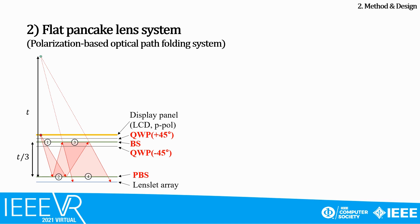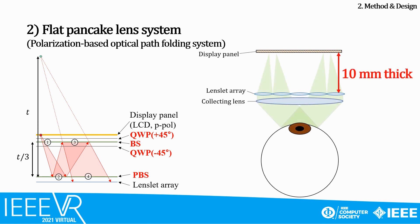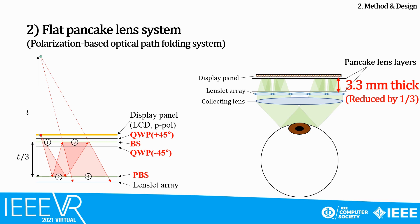Another important feature of our design is that we can apply a flat pancake lens system, which is a polarization-based optical path folding system. By adding 4 additional passive polarization controlling layers between the display panel and the lens lid array, we can make the light bounce back and forth so that we can secure the same optical path length with only a third of the thickness. By applying this technique, we can further reduce the thickness of the lens lid VR system. The 10 mm air gap is reduced to 3.3 mm, while every other performance like field of view and eye box remains the same.